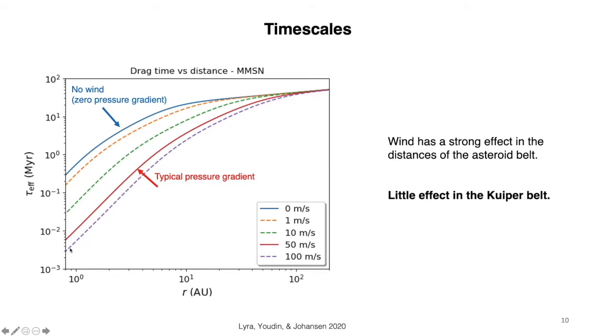And different lines here up to the violet line, which is 100 meters per second. And this red line here is a typical pressure gradient that gives you a wind of 50 meters per second.